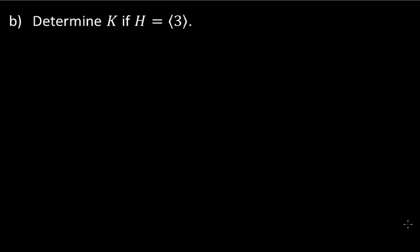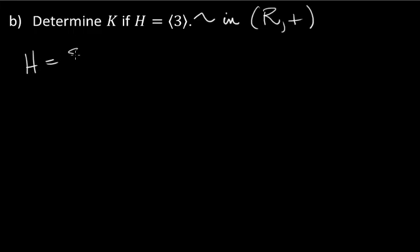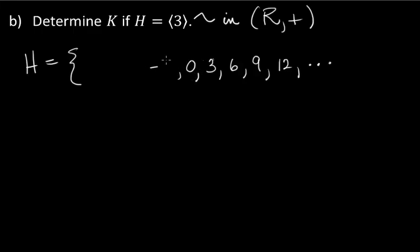The second part of this problem is to actually do an example of what was described — the subgroup described in part A. Determine K if H is the cyclic subgroup generated by 3, and note H is in the group of reals under addition. Let's write out H: 3 is in there, and 3 plus 3, adding another 3, and so on — multiples of 3. Zero is in there, and all the additive inverses. So H is simply the multiples of 3, generated by using addition.